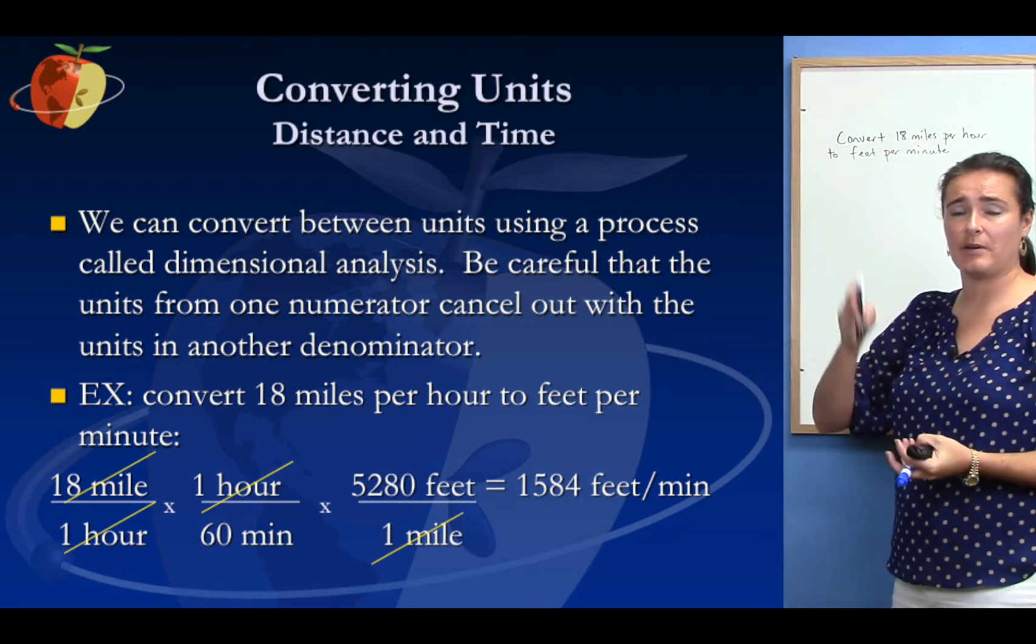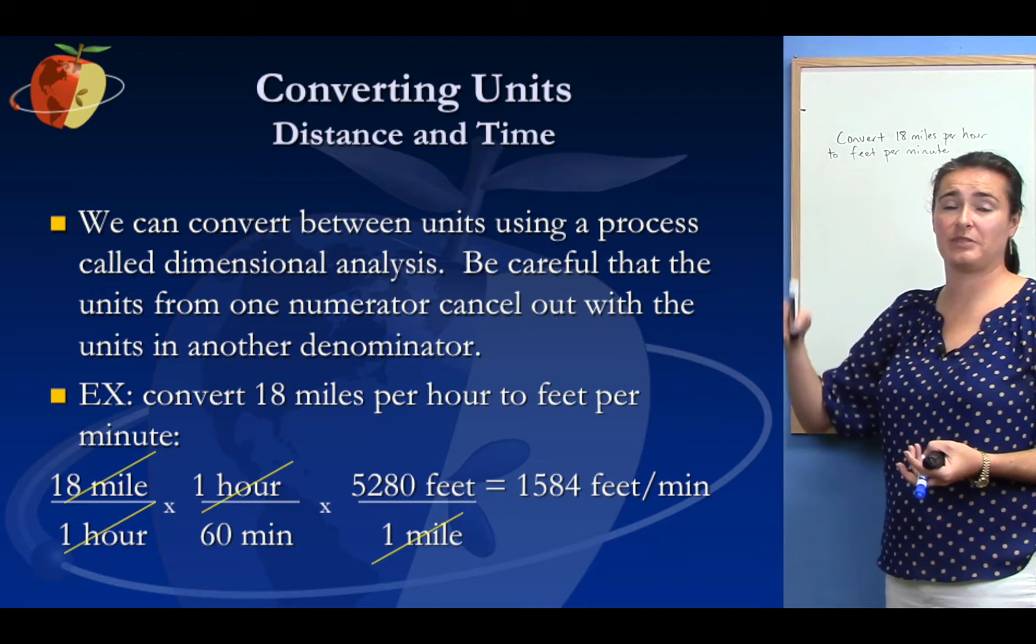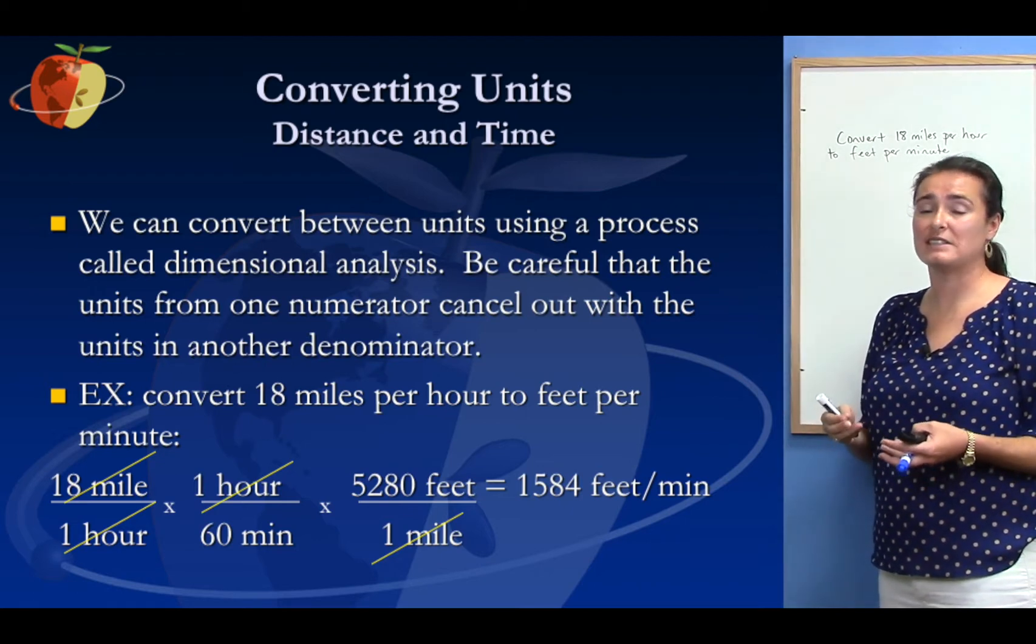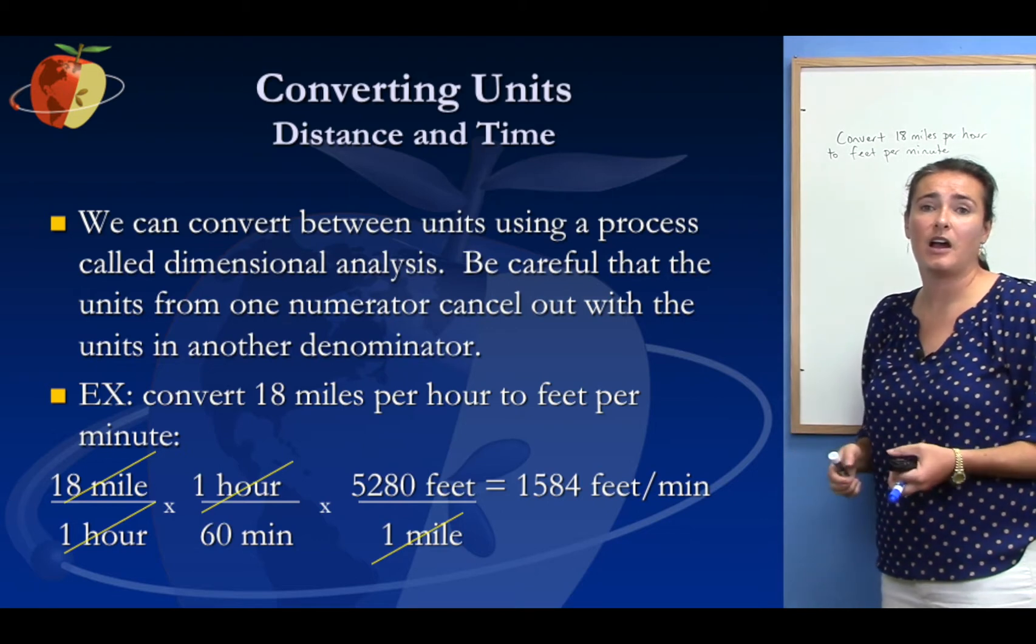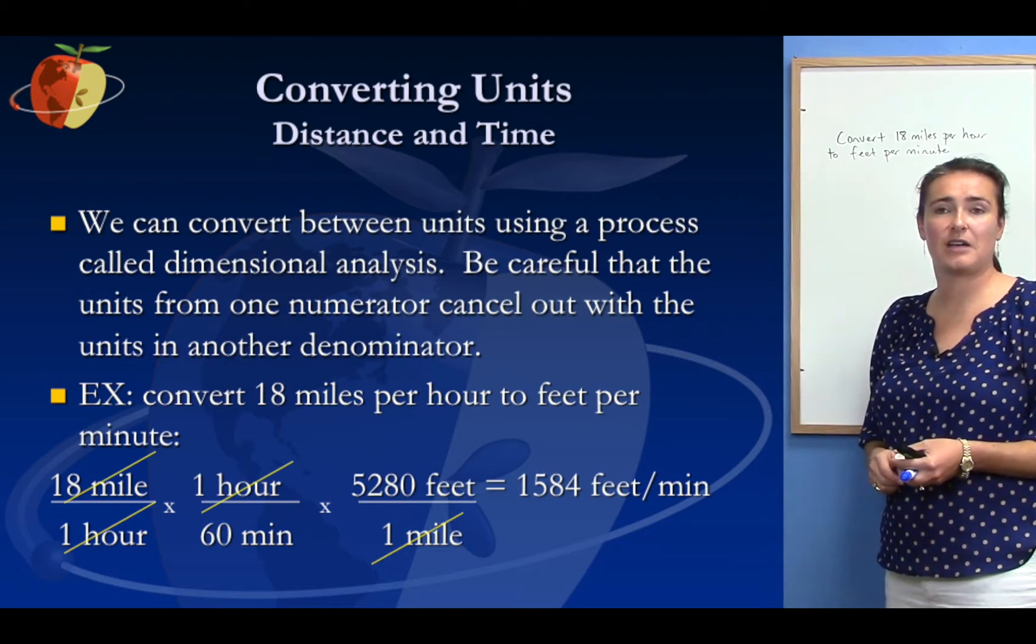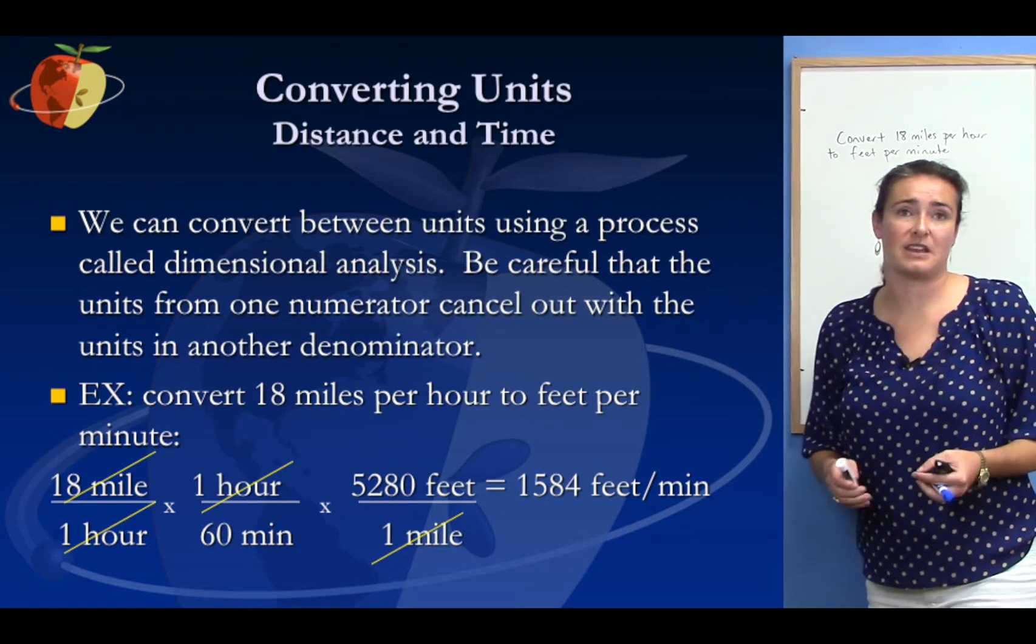What we do is we set up ratios, a series of multiplied ratios where the units in the numerator and the denominator cancel out. And we'll do an example. Our example is we're asked to convert 18 miles per hour to feet per minute. Let's try that.